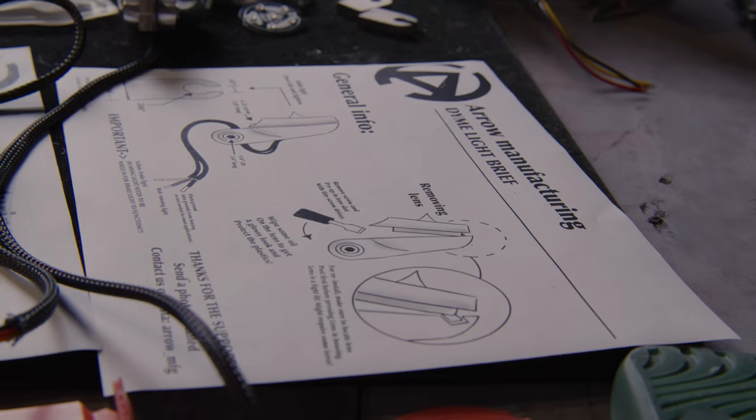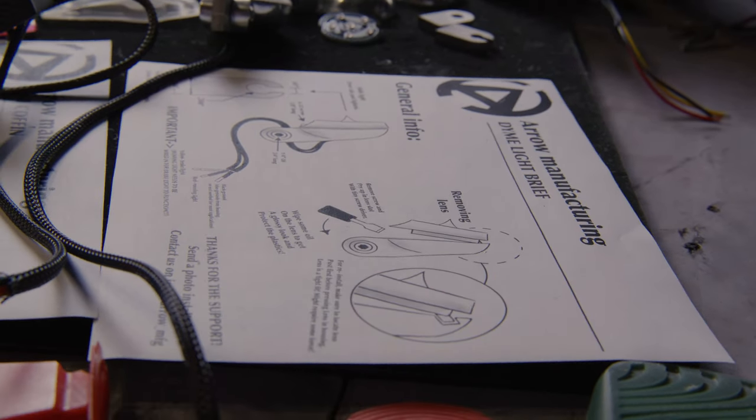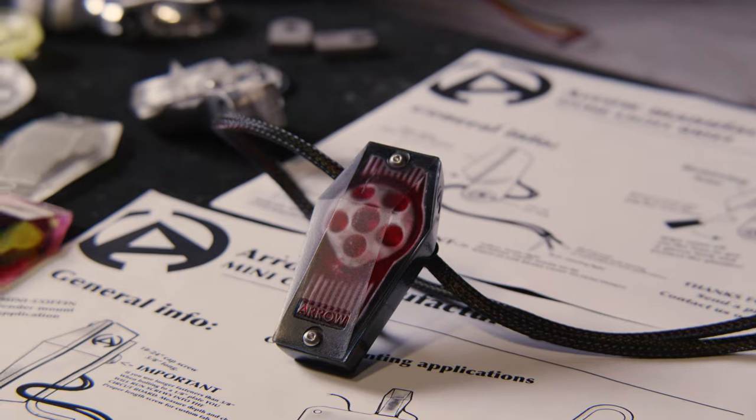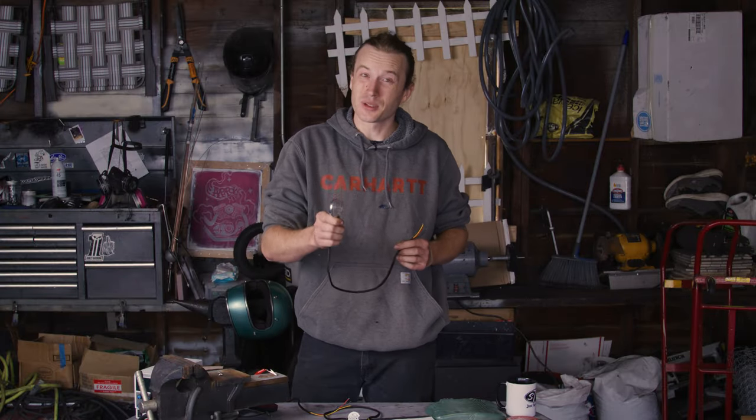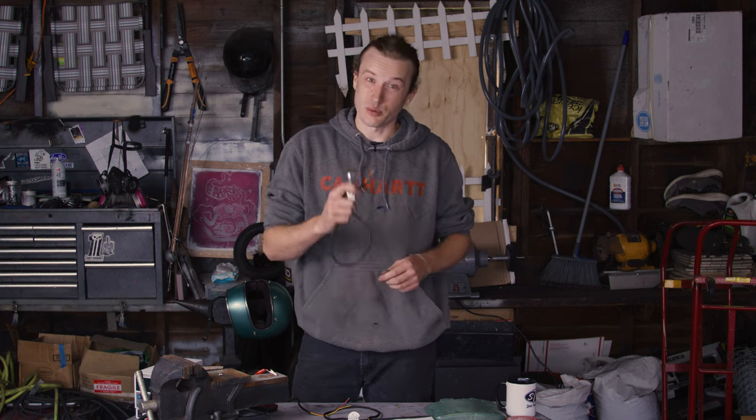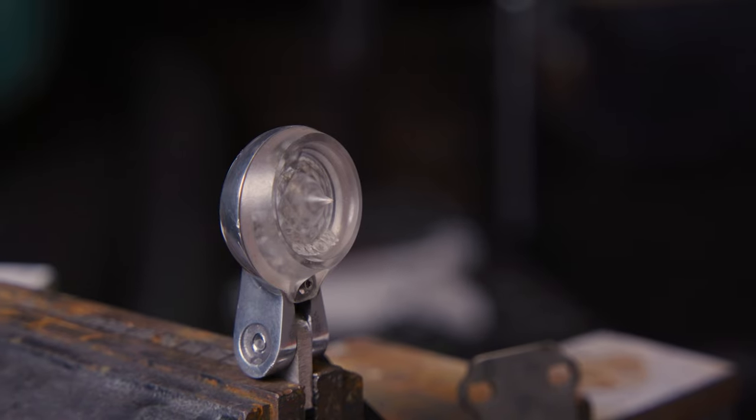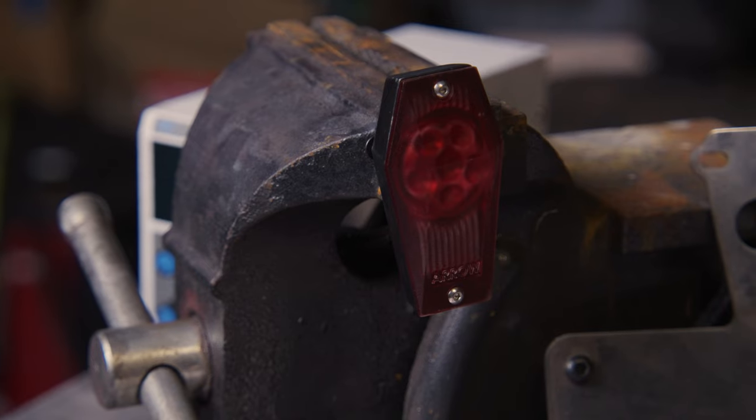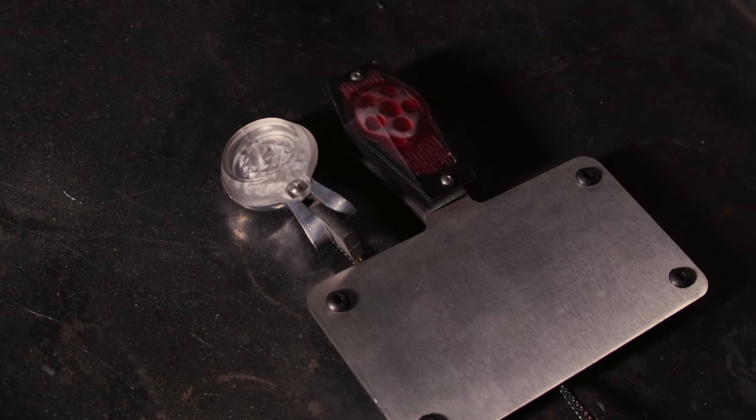There's nothing worse than building a beautiful bike and then sticking some little dime store tail light on there that's gonna break or fatigue later on. You can get your Aero Manufacturing lights at Lowbrow Customs, check it out.